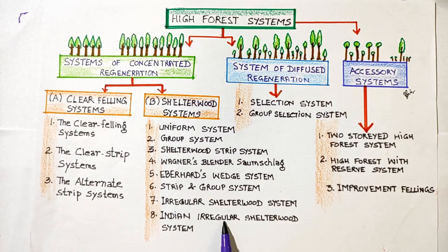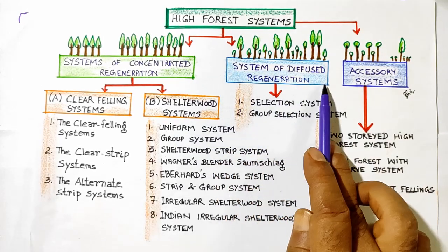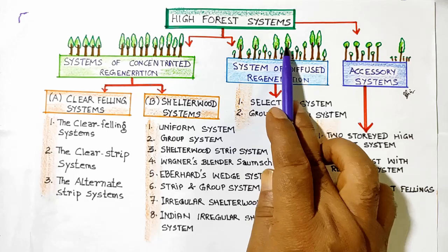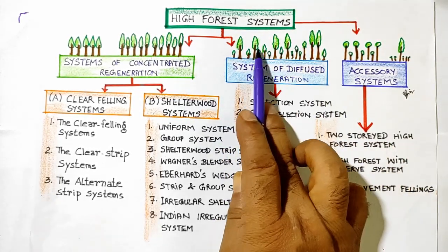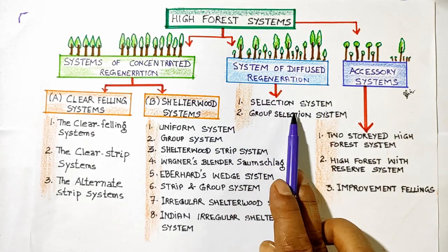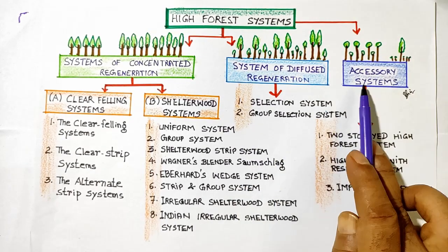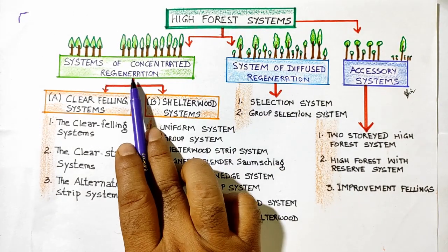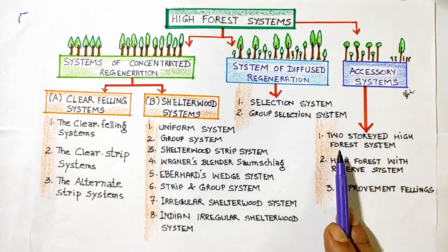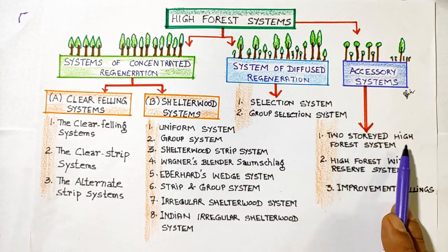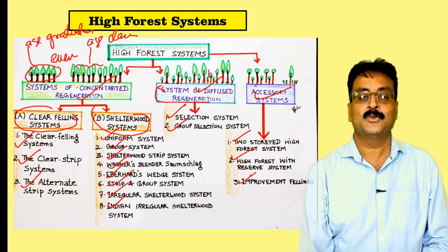Under the system of diffuse regeneration the forest crop is uneven-age, and we have the selection system and group selection system. The third category is the accessory system (SSE), which includes the two-storied high forest system, high forest with reserve system, and improvement fellings. We will be studying all of these throughout the course.